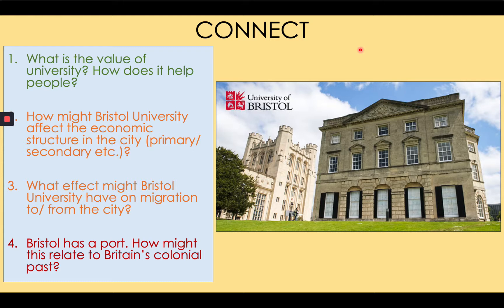Question two: how might Bristol University affect the economic structure of a city? Bristol University and universities generally might push the structure of a city towards the tertiary and quaternary sectors, especially because universities are leading centres of research and innovation where new technologies are invented and new problems are solved — such as Oxford University, which developed a vaccine for coronavirus.